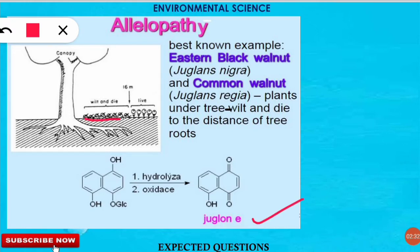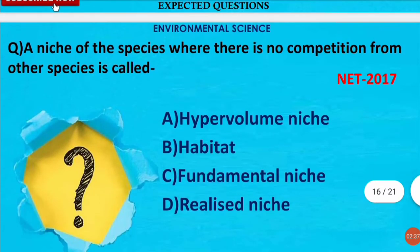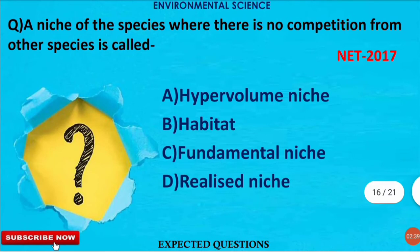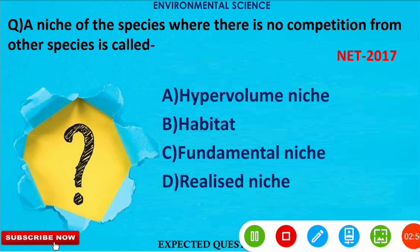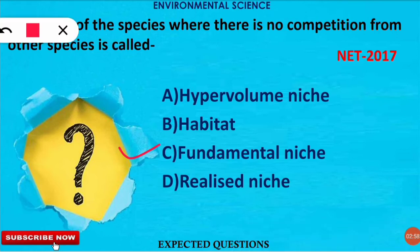The next question is: a niche of a species where there is no competition from other species is called what? The correct option is option C — the fundamental niche. The fundamental niche refers to the niche of a species when no other competitor is present in that ecosystem where a species lives.